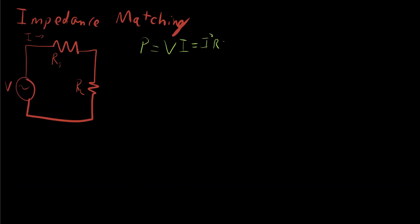Similarly, you might say, well, hang on a second. It's also equal to V squared over R. And so in that case, you want R to be as low as possible to make this P as big as possible.